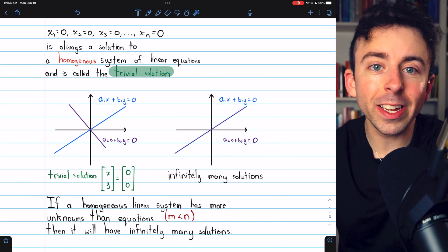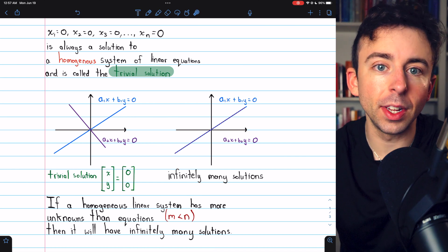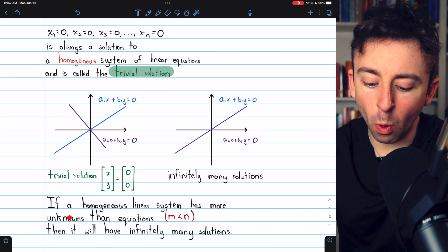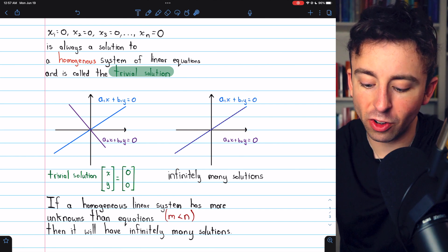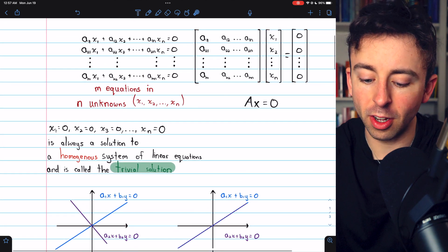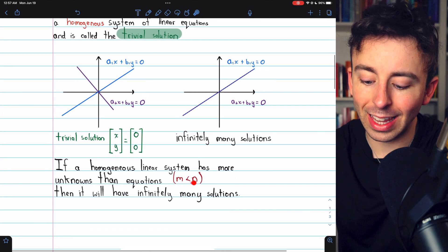There is one situation where it's very easy to see that a homogeneous linear system will have infinitely many solutions, which is if the system has more unknowns than equations. In terms of the letters we were using before, we had a linear system with m equations and n unknowns. So if m is less than n, if we have fewer equations than unknowns,